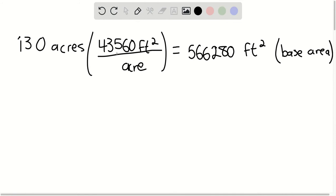We know that we have to round to three significant figures, so we can simply say 566 times 10 to the third square feet.